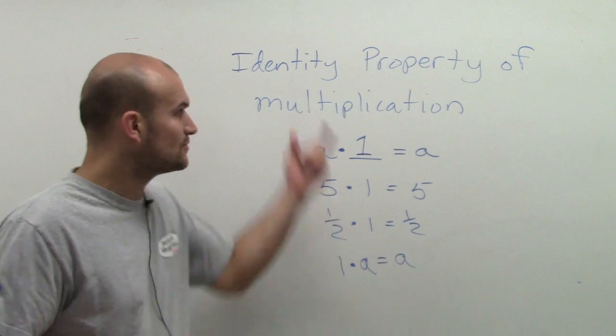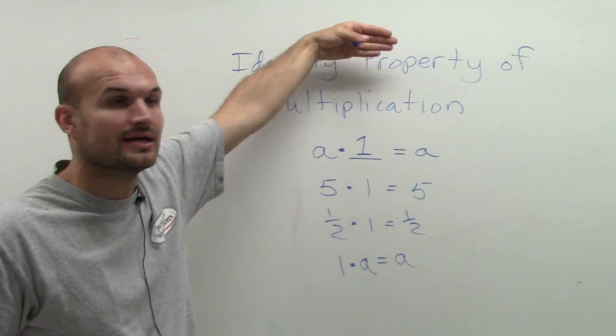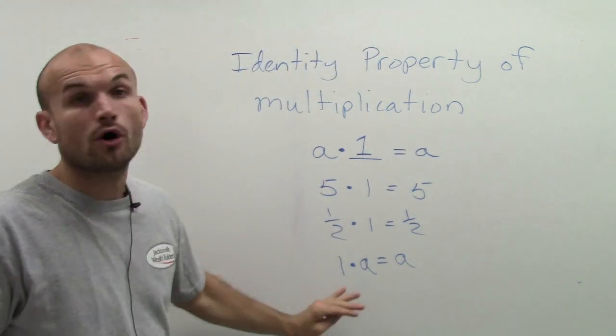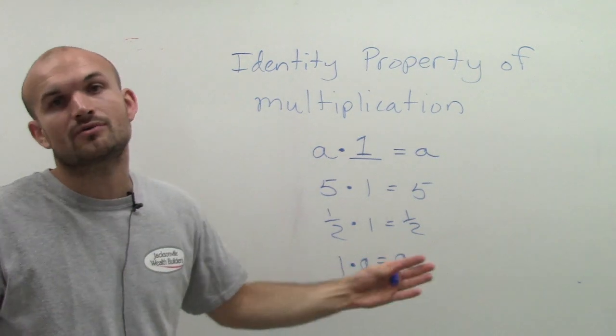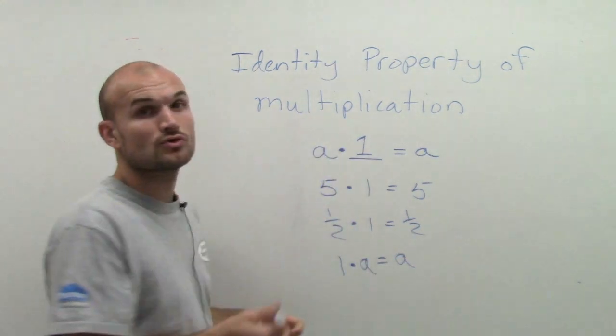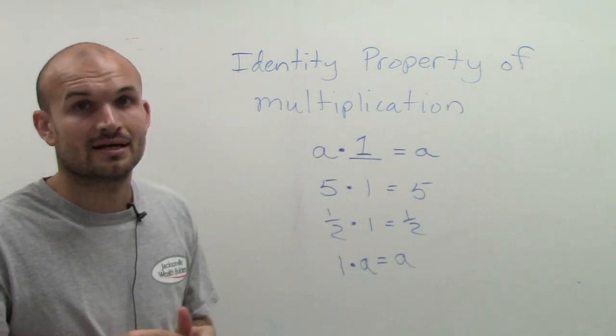We just don't really write it out because it's commonplace—we should know this identity property of multiplication. So we know there's always going to be a one there; we don't need to write it out.